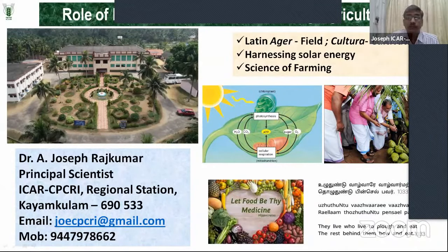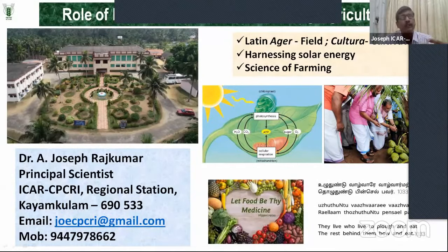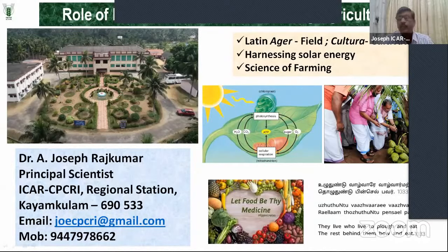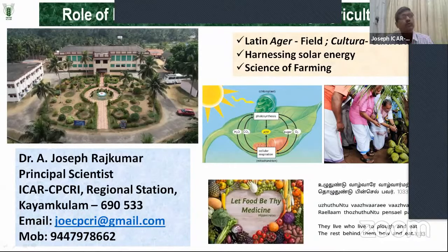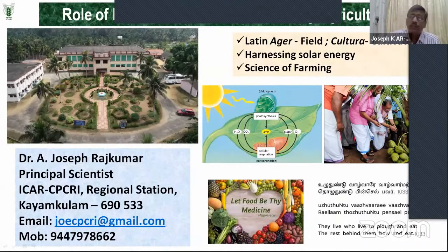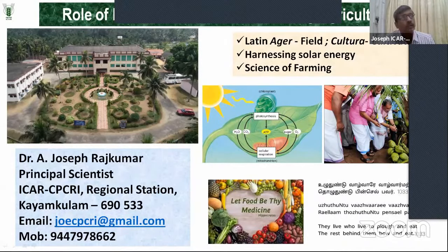As you all know, agriculture — the word is derived from 'ager' which means field and 'cultura' which means cultivation, so it is a profession with culture, which means field cultivation. Scientifically, agriculture is nothing but harnessing solar energy. As a human being, we may not be in a position to harness solar energy successfully, but every plant is in a position to do so. That is why we have to be extremely thankful to the farming community. In the words of the saint poet from Tamil Nadu: 'Uludundu valvare valvar' — they live who live to plough and eat, the rest behind them bow and eat.